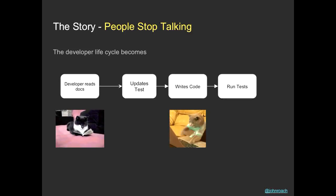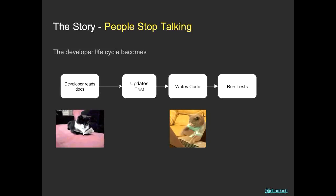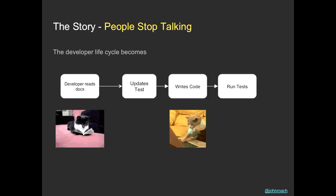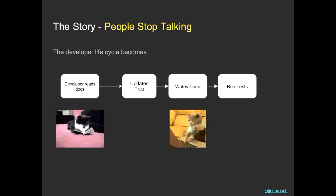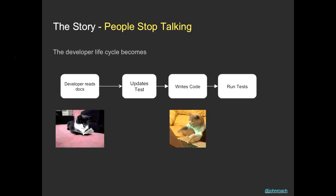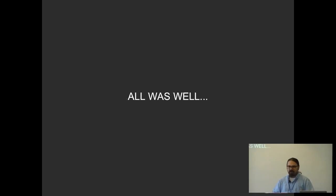The developer lifecycle looked something like this. When a developer came in, they read docs on how to develop their respective API. If they were on the zoo API team, they'd read zoo API documentation, update the tests if doing TDD, write the code, and run the tests. So all was well.